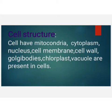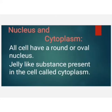Let's discuss this one by one. First is nucleus and cytoplasm. All cells have a round and oval nucleus. The nucleus is located in the center of the cell. Plant and animal cells are different.